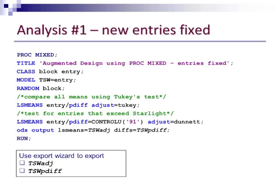If you're going to do all possible comparisons among your entries, you need to take some precaution to ensure you don't inflate type 1 error. I've used a Tukey adjustment in the LS means statement to allow for all possible comparisons. Another option, since we are primarily interested in comparing the new entries to Starlight — which was entry number 91 — is to use the CONTROL option. In that case, I'm essentially doing a Dunnett's test, and I use the Dunnett's adjustment to control the experiment-wise type 1 error.